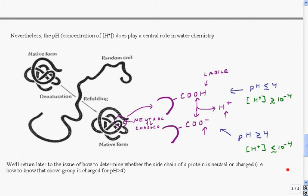We can also look at this in terms of H-plus concentrations: if the concentration is greater than 10 to the minus 4, this group will be neutral; if it's less than 10 to the minus 4, this group will be charged. This is why the concentration of protons, even though it's often a very small number, does have a very large effect on water chemistry and biological systems which occur in water. In a couple of lectures, we'll return to how you're able to calculate how much of this group will have protons versus not have protons as a function of pH.